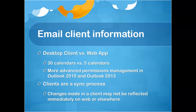We're going to talk about client information. The difference between a desktop client and a web app involves some different features. On the desktop client, you can view up to 30 calendars, versus on the web app you can only view five calendars at a time. There is also more advanced permission management in Outlook 2010 and Outlook 2013. The Outlook web app has many of the same features, but some more advanced permission management is set in those desktop clients. Also note that a client is a sync process — changes made in a client may not reflect immediately on the web. If you delete an email or appointment, it has to sync, which can take a few seconds to a couple of minutes depending on your network connection.